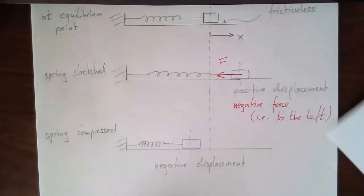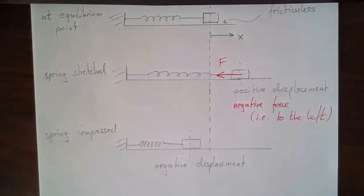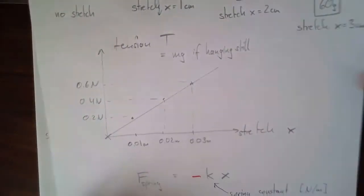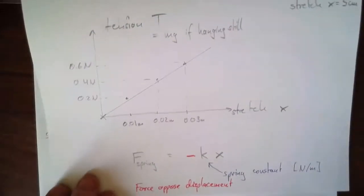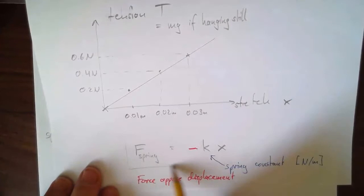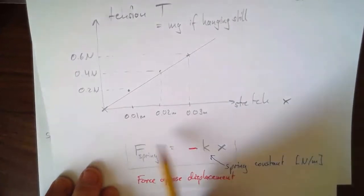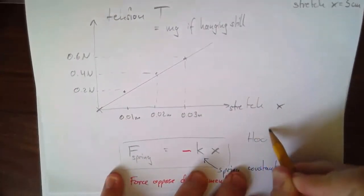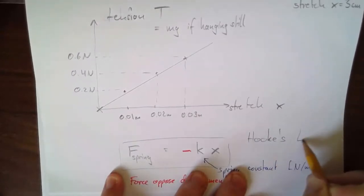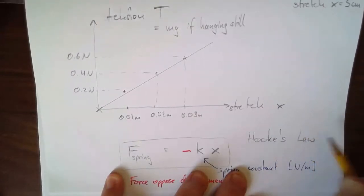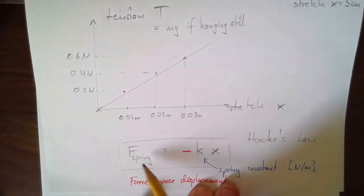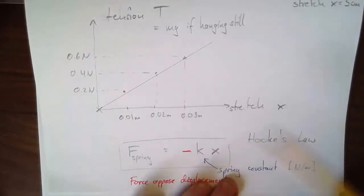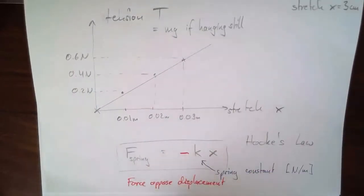This equation F = −kx is what we call Hooke's Law. It states the linearity between the force and displacement, and the fact that the force points in the opposite direction to the displacement.